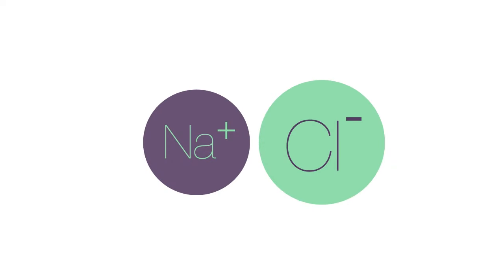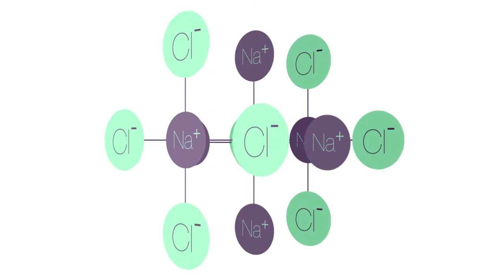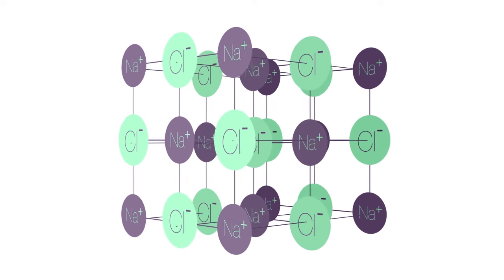When we talk about sodium chloride, there aren't actually any individual sodium chloride molecules. Instead, the sodium and chloride ions are arranged in a regular repeating 3D pattern known as a giant ionic lattice.